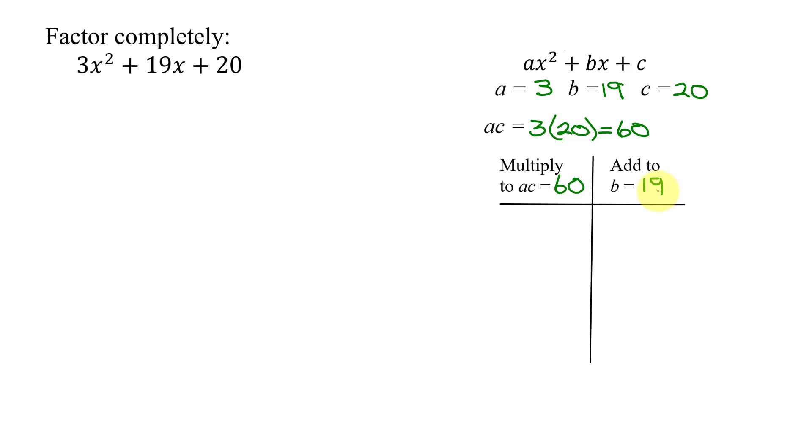Hopefully, those numbers come to you quickly, but I'm going to show you a systematic method that works if you get stuck finding the numbers. I start with 1 and 60. 1 times 60 is 60, but 1 plus 60 is 61, not the number I'm looking for. Does 2 divide into 60? Yes. So I have 2 times 30 is 60, but 2 plus 30 is 32. I'm going to put the video on pause while I complete the table. So the next numbers I tried was 3 times 20. That didn't work. Then I tried 4 times 15, but that one did work. So these are the two numbers I'm looking for.